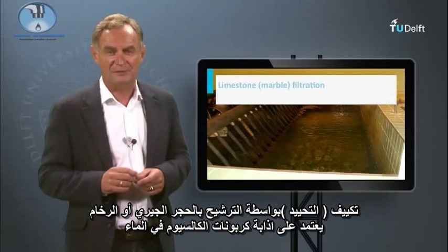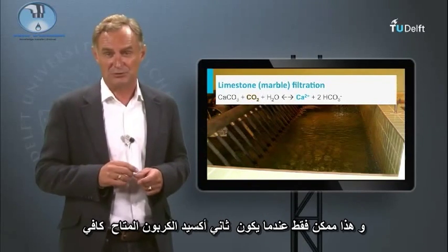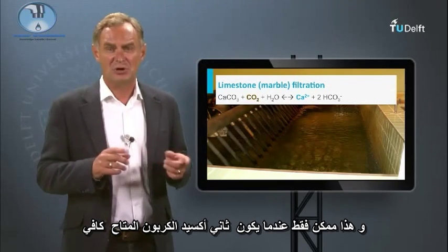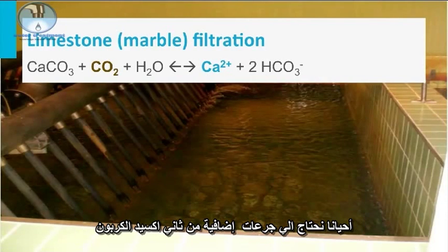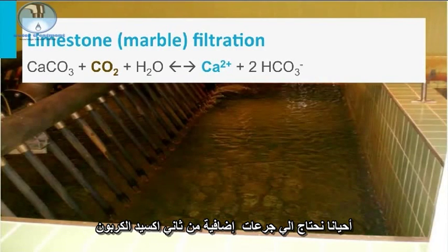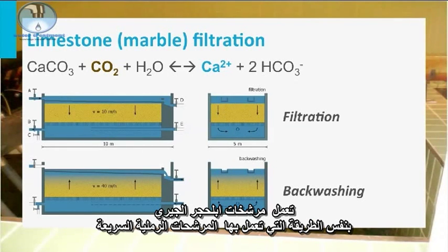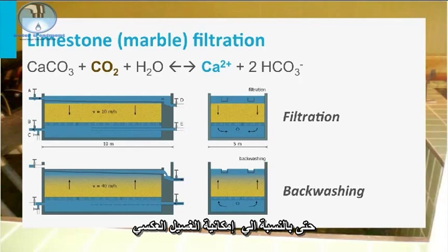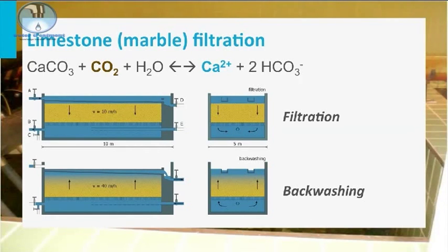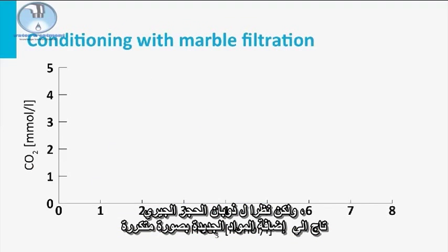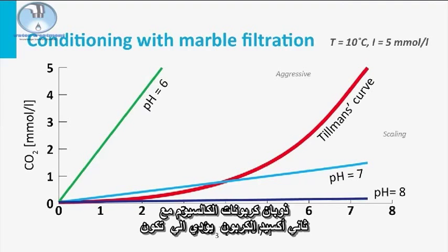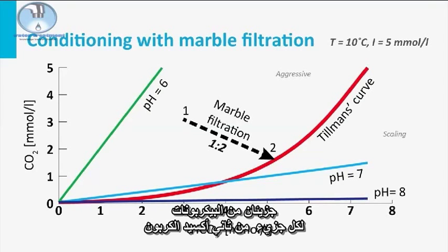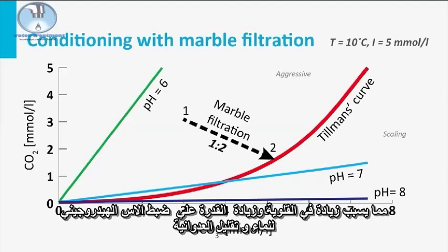Conditioning with limestone or marble filtration is based on the dissolution of calcium carbonate in water. This is only possible when sufficient carbon dioxide is available; sometimes additional carbon dioxide dosing is required. Limestone filtration is performed in the same way as rapid sand filters, including the possibility for backwashing. However, due to the dissolution of the limestone, frequent addition of new material is needed. The dissolution of calcium carbonate with carbon dioxide results in the formation of two moles of bicarbonate per one mole of carbon dioxide, increasing the alkalinity and buffering capacity of the water and decreasing the aggressiveness, bringing the water into chemical equilibrium.